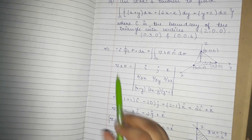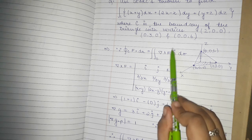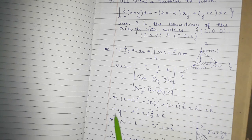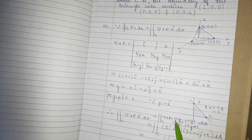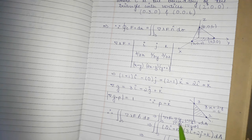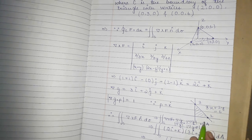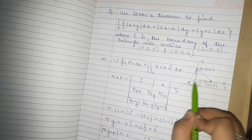Now we will find the value of n cap. How do we find n cap? n cap is equal to grad g divided by the magnitude of grad g, where g is the equation of our surface — which is the triangle plane.